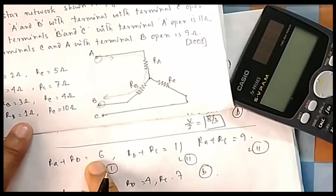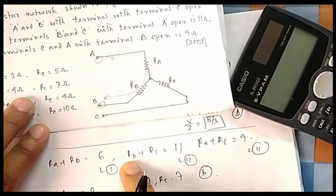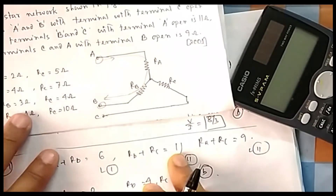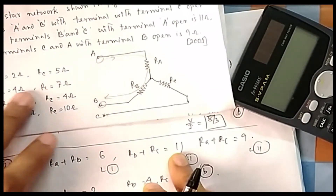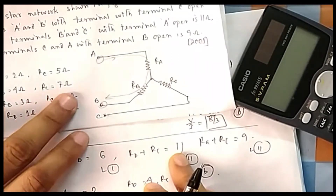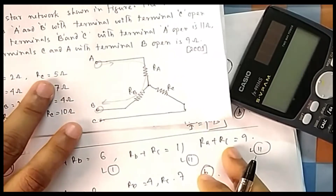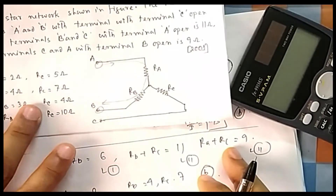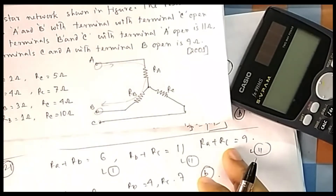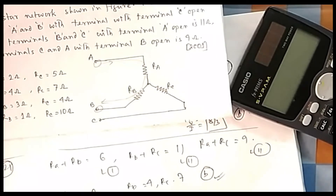You can verify from the options: Ra + Rb should be 6, so 4 + 2 = 6 ✓. Rb + Rc should be 11: 4 + 7 = 11 ✓. Ra + Rc should be 9: 2 + 7 = 9 ✓. Option B is the answer.